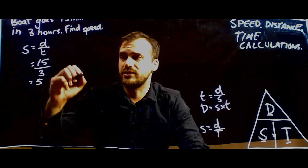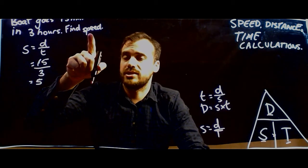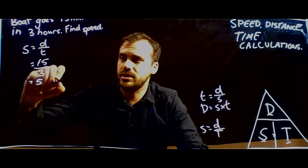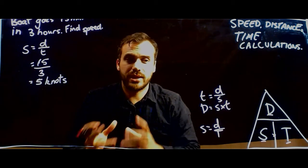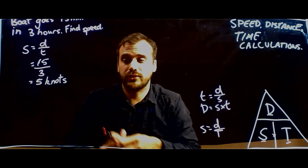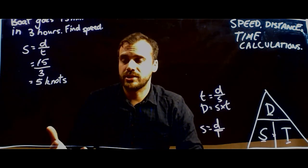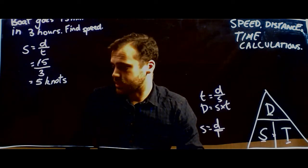Now if you type that into your calculator, you're going to get an answer of five. And that five is five, it's speed, and speed is measured in knots. So that's really it for that kind of question. Of course, they do get a little more complicated, because sometimes people don't play nicely with the stuff.